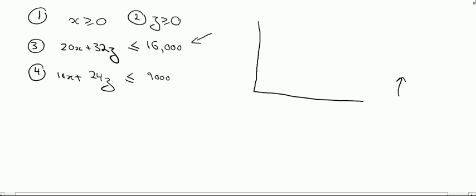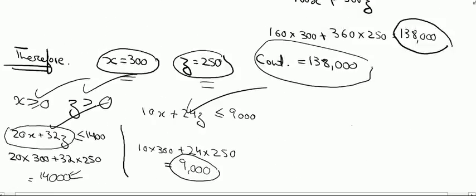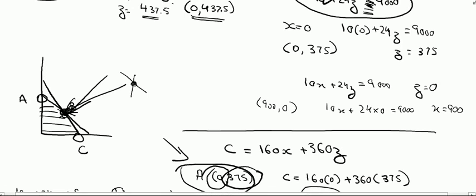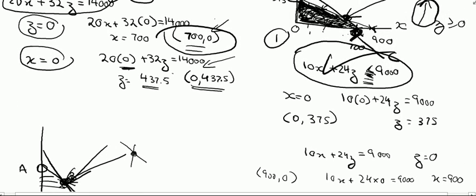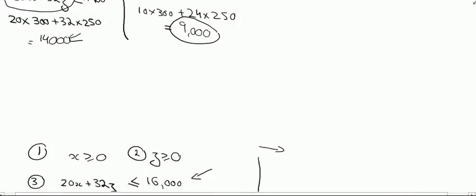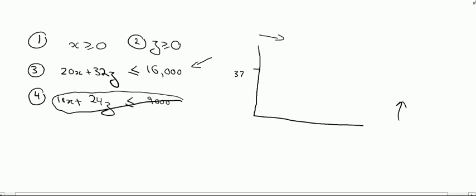If I redraw the graph: x ≥ 0 and z ≥ 0 conditions remain unchanged. Constraint four has not changed, so its points must not change. Looking at our previous working, 10x plus 24z ≤ 9,000 had the points (0, 375) and (900, 0). These two points have not changed, so we still have (0, 375) and (900, 0) — these are constant.